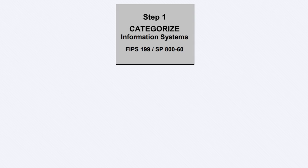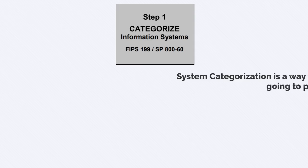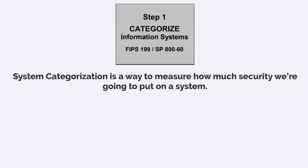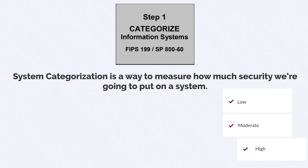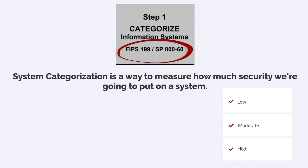Step 1 tells us that we need to categorize the information system. System categorization is a way to measure how much security we're going to put on a system. The different categories are low, moderate, and high. You don't need as much security on a low system as you would a high system. The information system that we will be categorizing is the DOP network. Our chart tells us to refer to FIPS 199 and Special Publication 800-60 for guidance on categorizing a system.